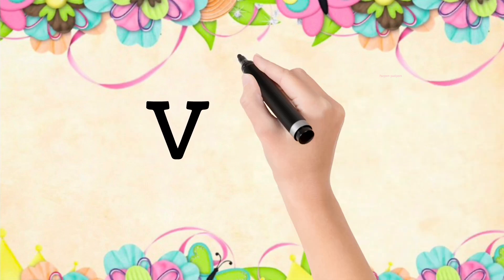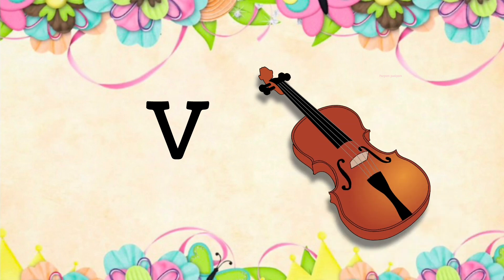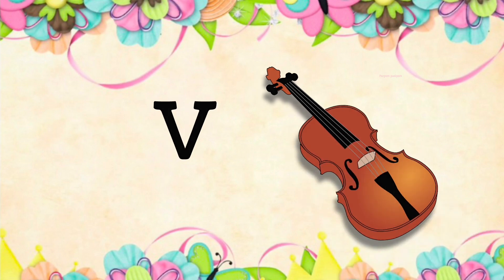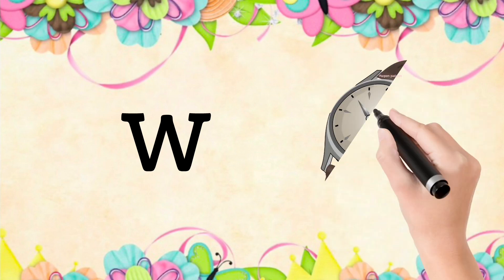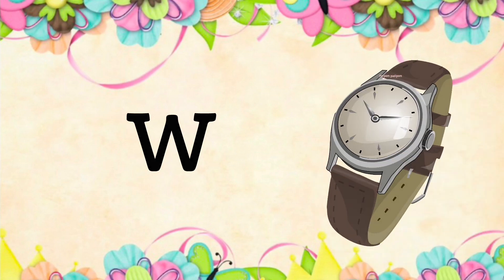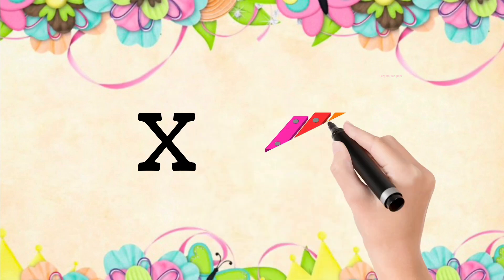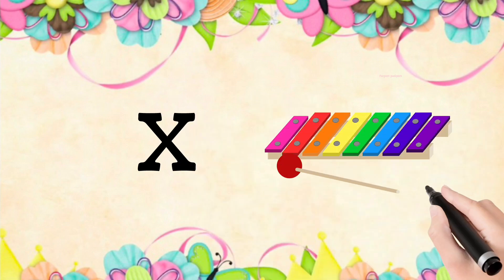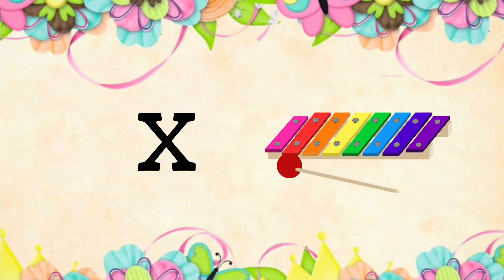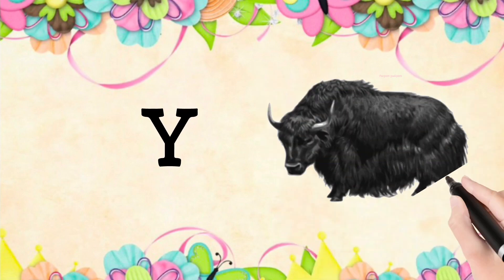V is for violin, W is for watch, X is for xylophone, Y is for yak.